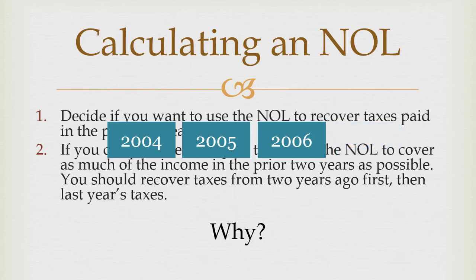If it's a really small net operating loss and you don't think you're going to have any more net operating losses in the future to carry back, and your tax rate was much higher in 2005 than in 2004, then you might decide to just do one year — and that's fine. But the most common logic is to go back as far as we can, because I can never go back to that year again.